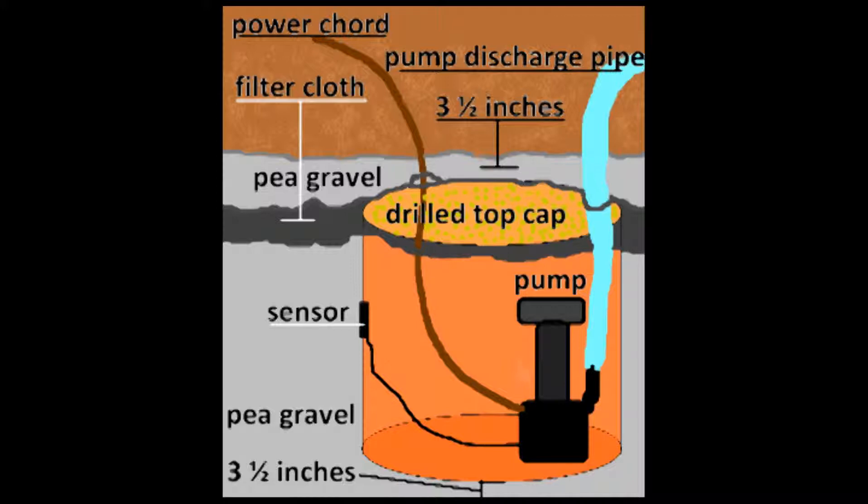Next, drill at least 75 holes in the bucket cover with two holes large enough to fit the power cord and drain pipe through as shown in the diagram.